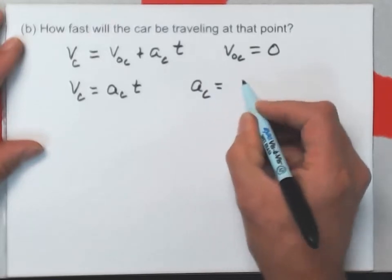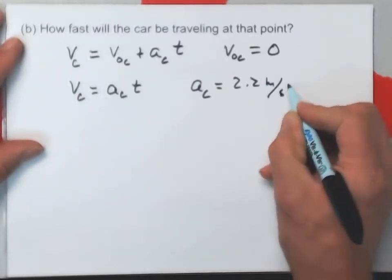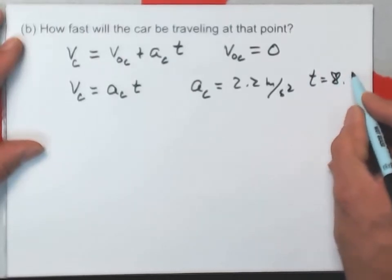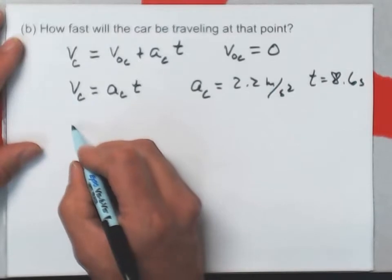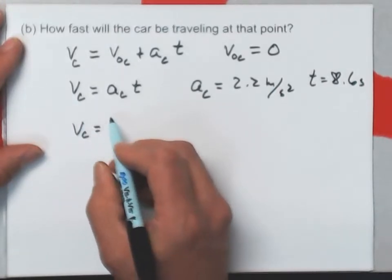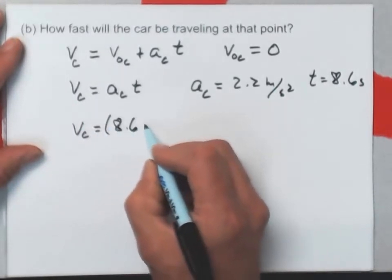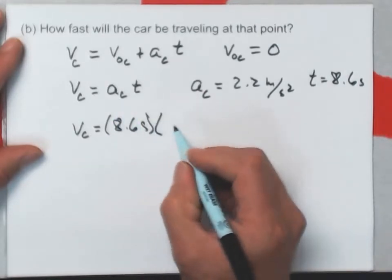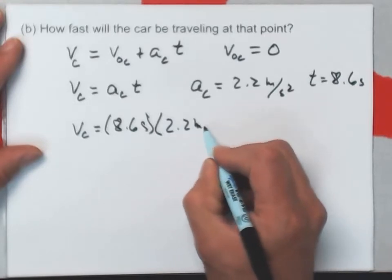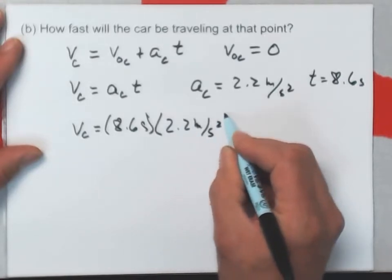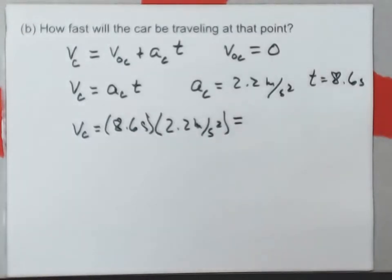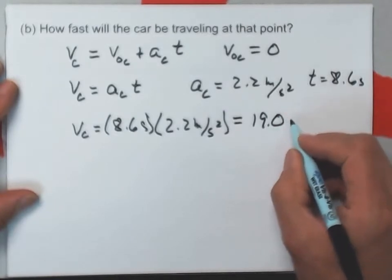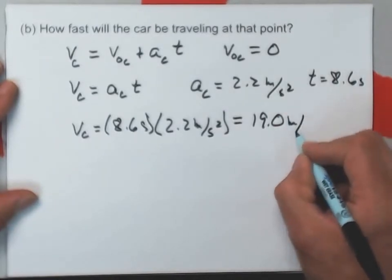Acceleration of the car was that 2.2 meters per second squared. The time to catch the truck was the 8.6 seconds. So, velocity of the car is just going to be the product of those two. 8.6 seconds. Well, multiplication is commutative. I can write it in either order. 2.2 meters per second squared. And if I multiply those two things together, I get 19.0 meters per second.